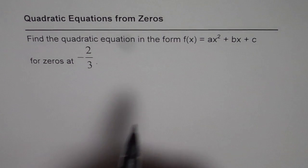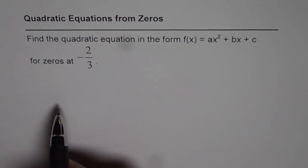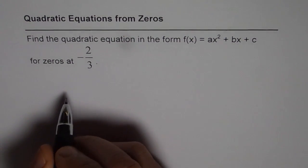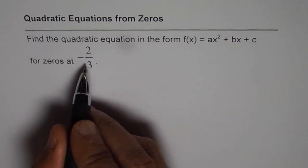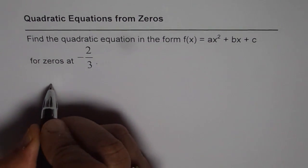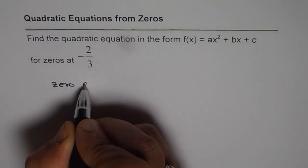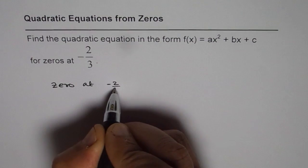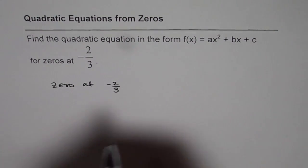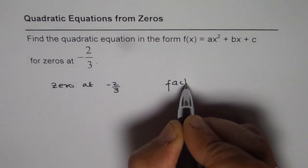So we need to get a quadratic equation and we know only one zero. It simply means that we have a double zero at -2/3. So if we have a zero at -2/3, that means we have a factor at which point?